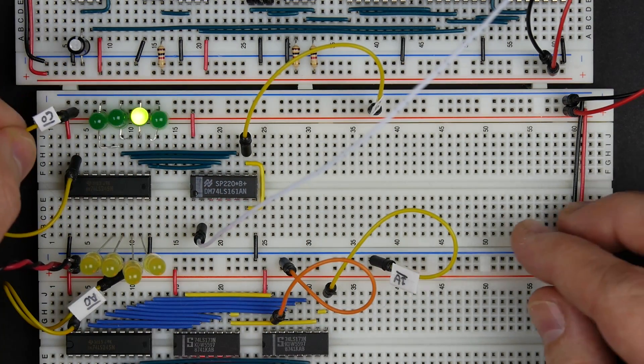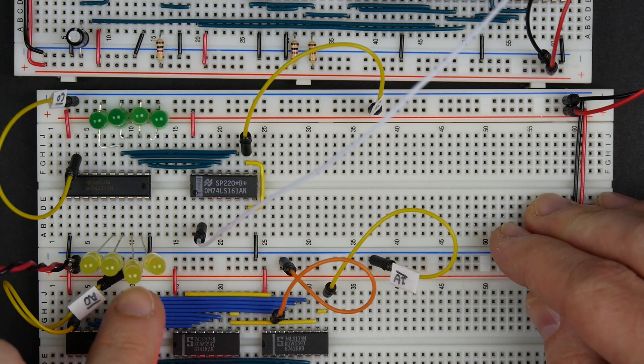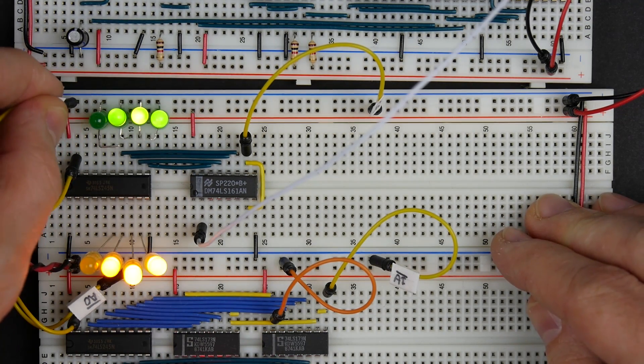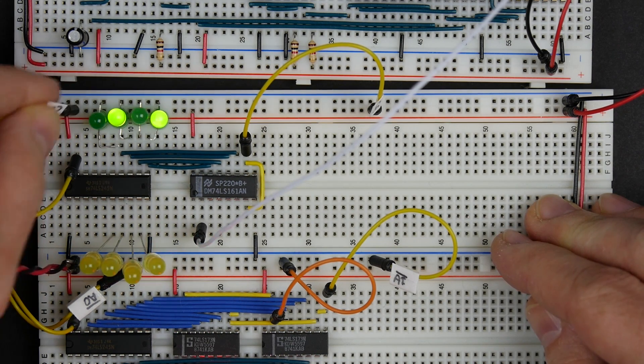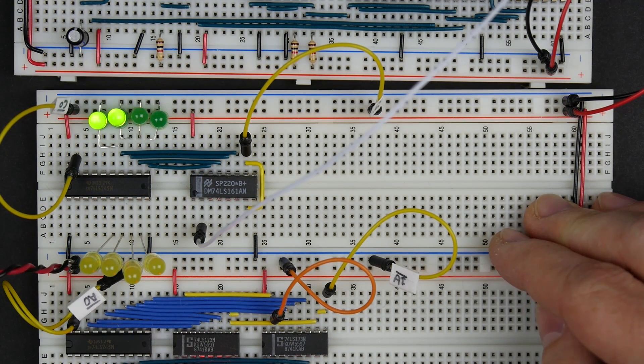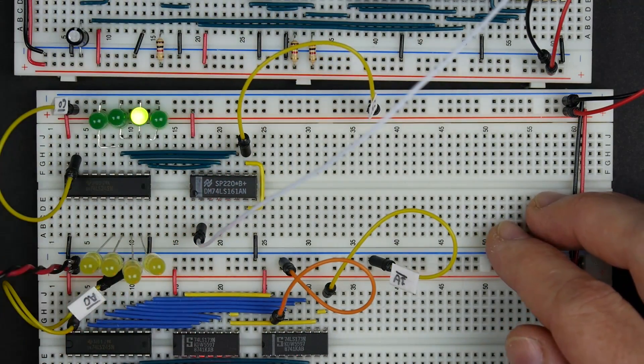But if we take our counter output enable and we bring that low, we see that the contents of the counter are being put out on the bus. If we take our counter output enable and take it high, then it's no longer putting that out on the bus. It looks like the counter out is working and the counter enable are both working.